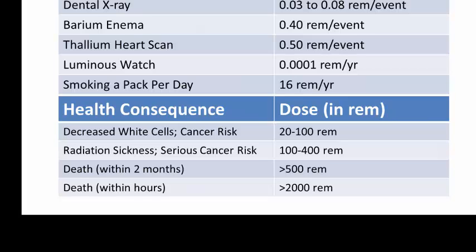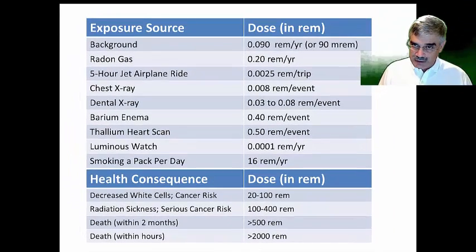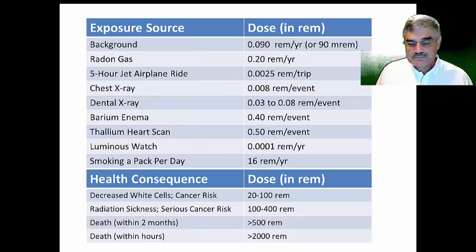At higher exposures — 100 to 400 REMs per year — you can have radiation sickness or serious cancer risk. If a person is exposed to over 500 REMs, either as an acute exposure or per year — for example, someone working in a radiation laboratory without taking precautions or monitoring their exposure — a dosage of over 400 REMs per year leads to death in about two months. A person exposed to greater than 2,000 REMs will die almost immediately, within hours.